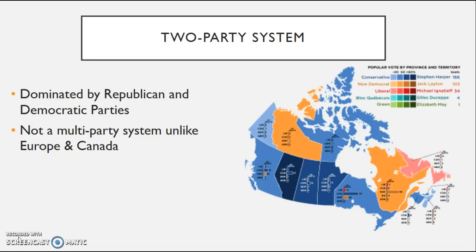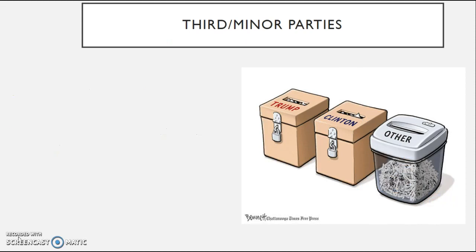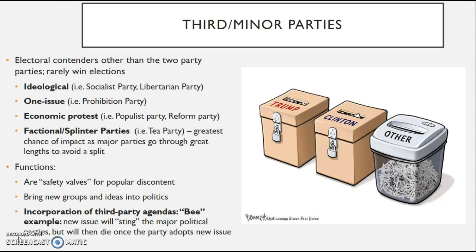When we're talking about the two-party system, we're talking about domination by the Republican and Democratic parties. When we look at third parties — sometimes referred to as minor parties — it's important to note that they rarely win elections. There are four different types: ones based on ideology such as socialism or libertarianism; one-issue parties focused on a single issue, like the Prohibition Party which sought to make alcohol illegal; economic protest parties such as the Reform or Populist parties; and splinter or factional parties, such as the Tea Party, which split from the Republican Party and was more conservative, especially on taxation.